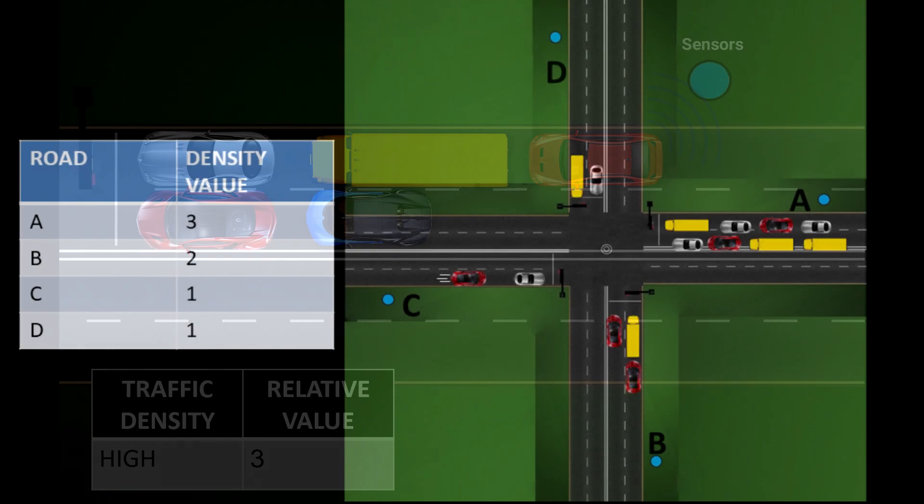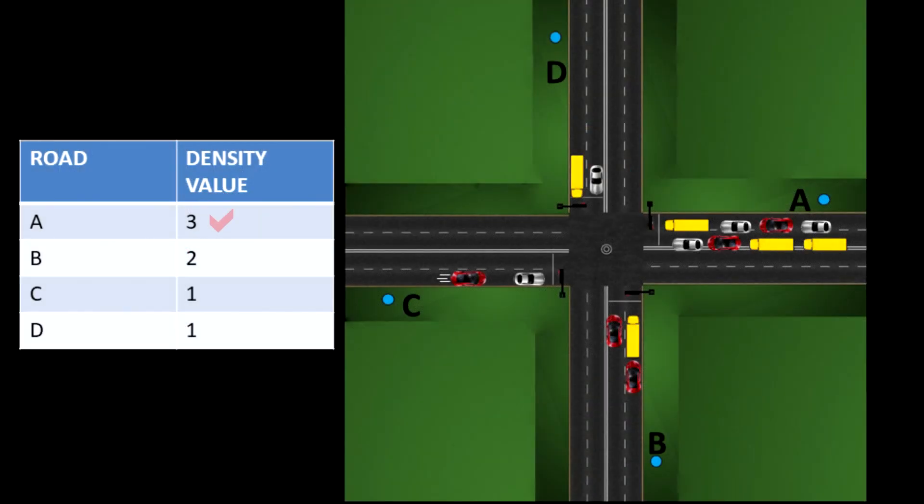Consider a simple scenario of a 4-way junction. Clearly, we notice path A has high traffic, path B has medium traffic, and paths C and D have low traffic levels. The corresponding density values of 3, 2, 1, and 1 are sent to the gateway.